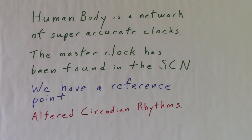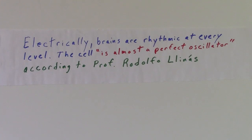The human body is a network of super-accurate clocks. The master clock has been found in the SCN region of the brain. We have a reference point. We're looking for altered circadian rhythms. Electrically, brains are rhythmic at every level. The cell is almost a perfect oscillator, according to Professor Rudolfo Linas of NYU.